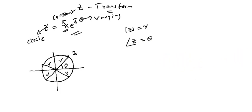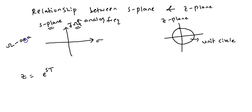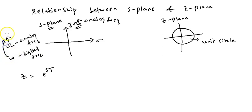Now we will discuss the relationship between the z-plane and the s-plane. Here, both analog frequency and digital frequency are involved, which is why two different symbols are used. Generally one symbol is used for analog frequency and another for digital frequency, but both are called omega and always read as omega.